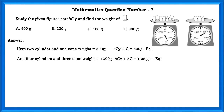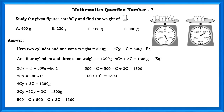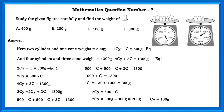From equation 1, 2Cy equals 500 minus C. Substituting into 4Cy plus 3C equals 1300, we write it as 2Cy plus 2Cy plus 3C equals 1300. Substituting 2Cy, we get 500 minus C plus 500 minus C plus 3C equals 1300, giving 1000 plus C equals 1300. So C equals 300 grams. Substituting the value of C in equation 1, we find Cy equals 100 grams.